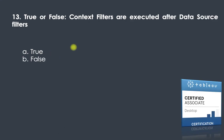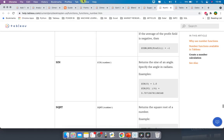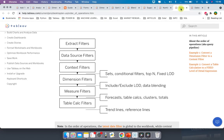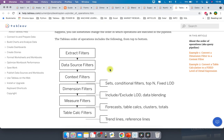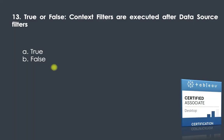Question thirteen: context filters are executed after data source filters. In Tableau Help under the order of operations, context filters come after data source filters — so this is true.